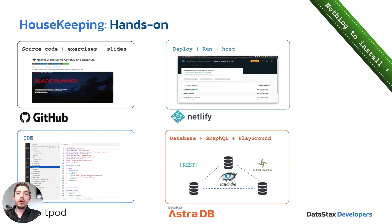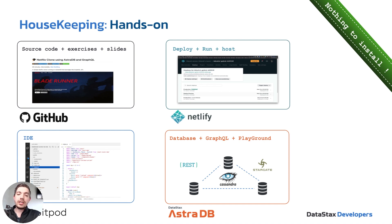For our database to manage our big data, we're going to be using AstroDB. AstroDB is a database as a service built on the Apache Cassandra project. It has a lot of really cool features, including a data layer called Stargate that is going to expose our database through various different APIs, including REST, GraphQL, and Document APIs. We'll be using GraphQL today.